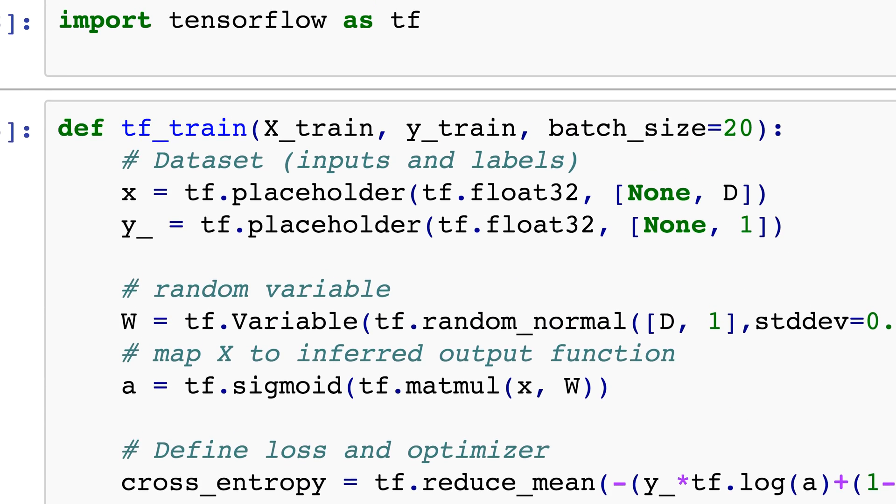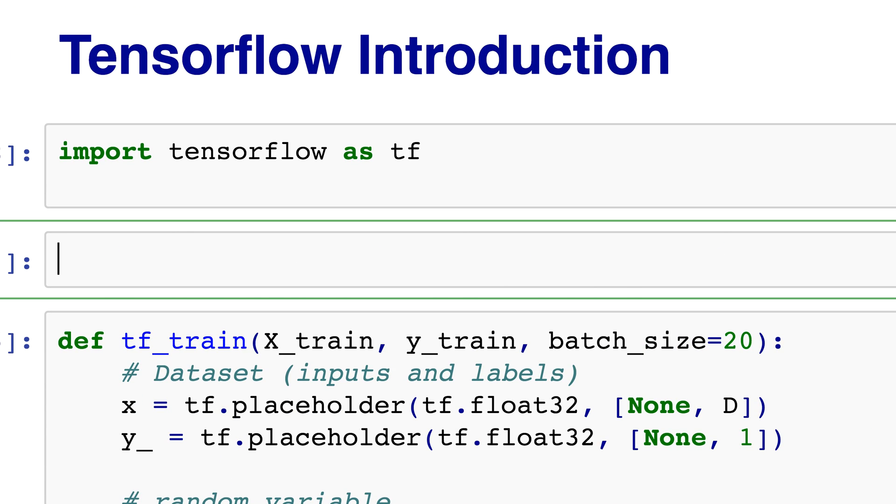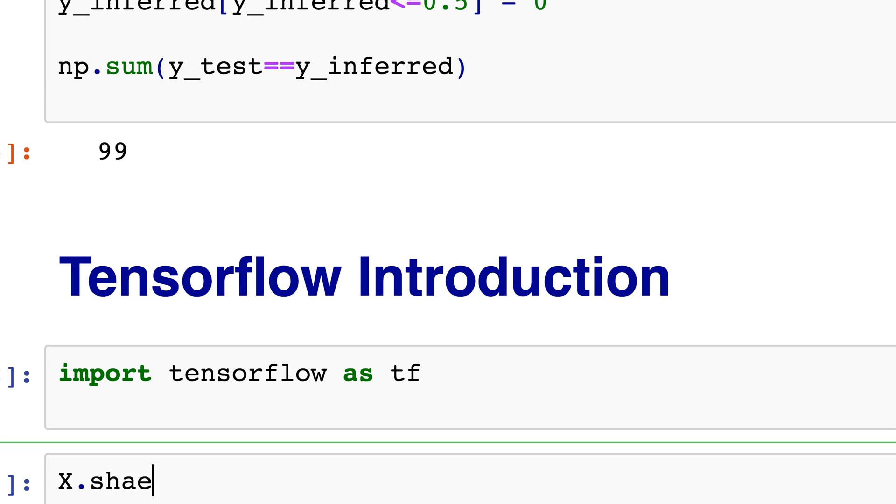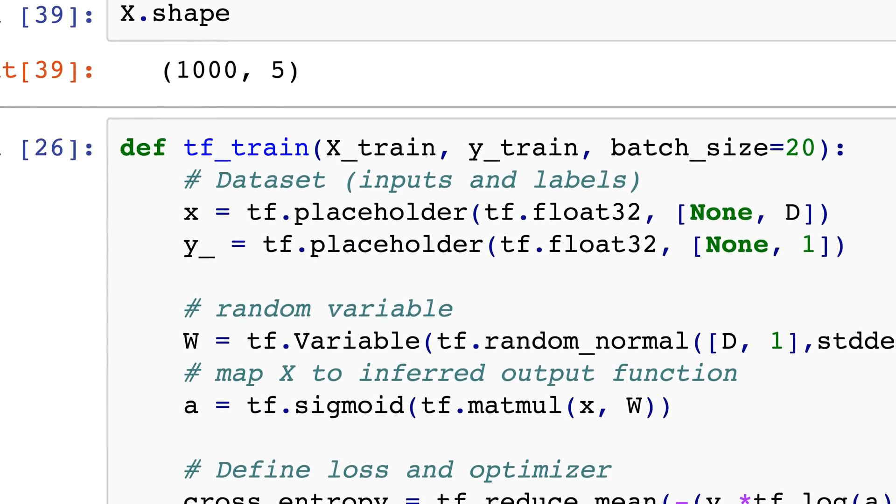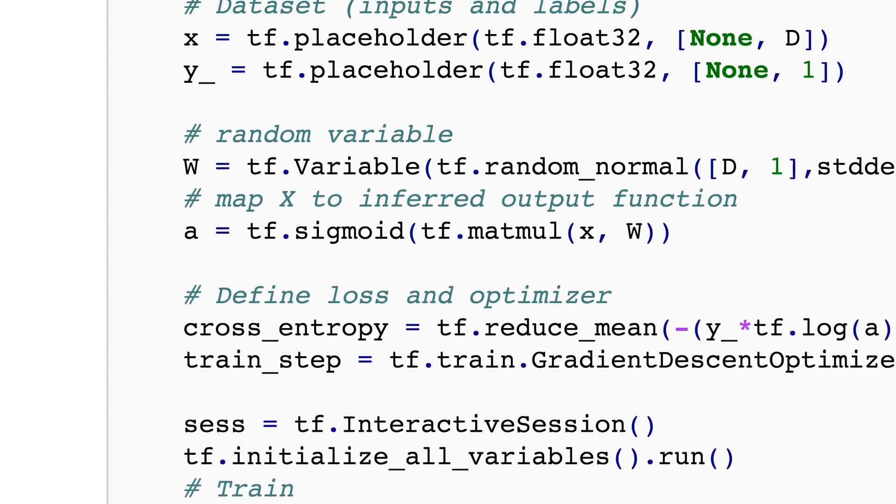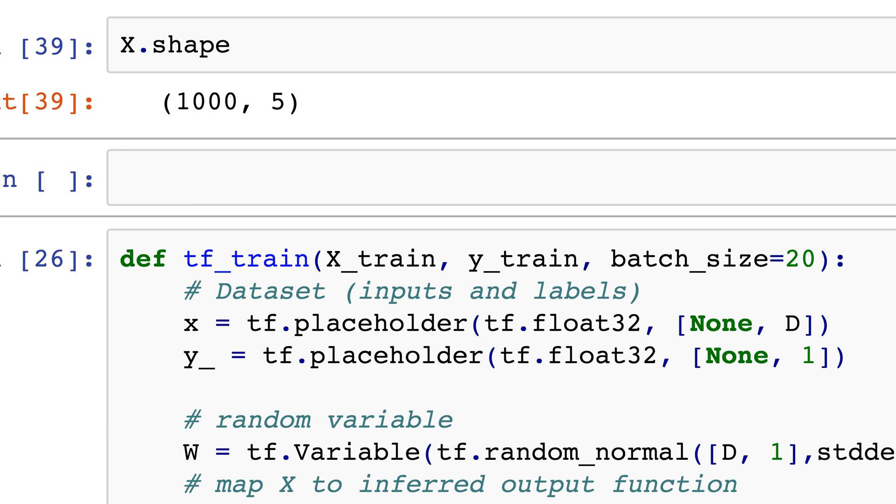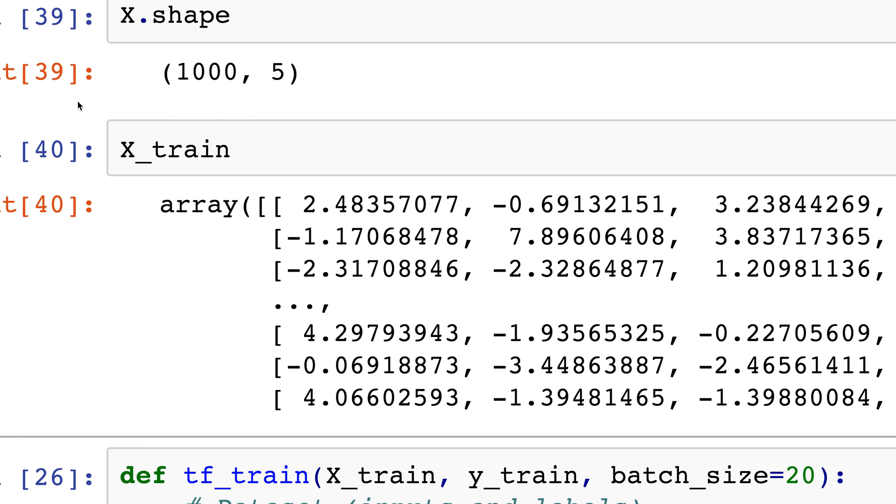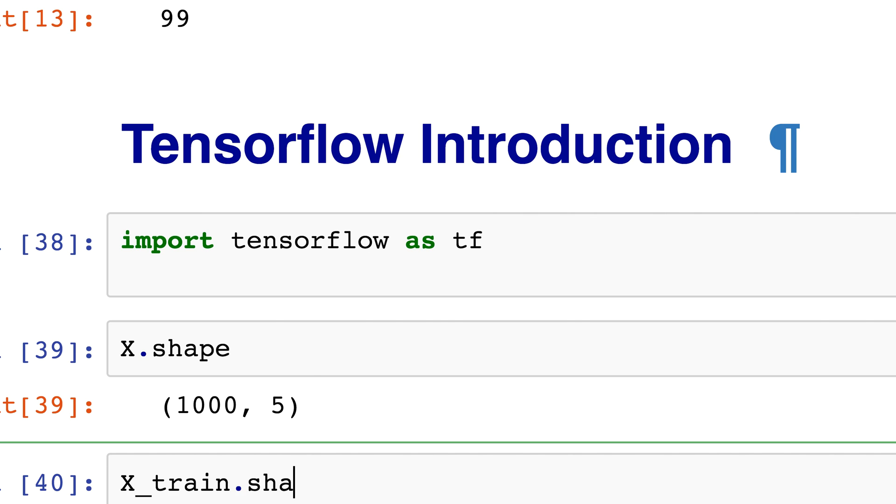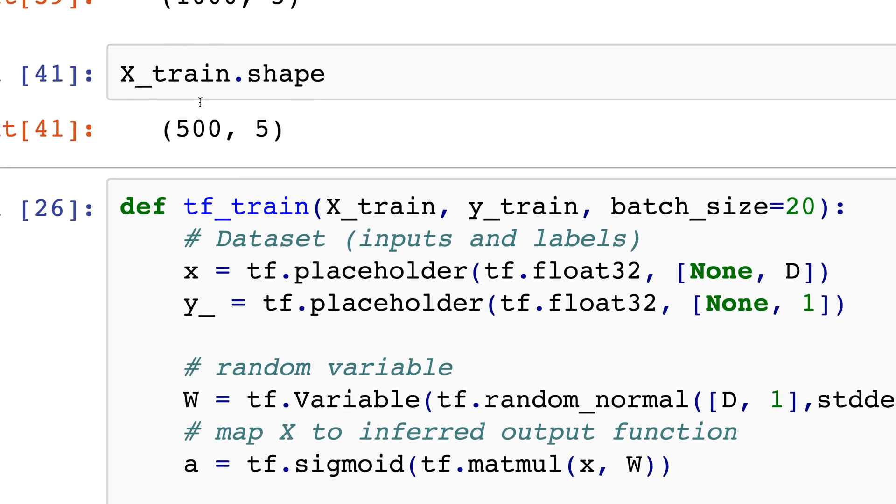So x dot shape, it's a thousand by five. In fact x underscore train is 500, so I've just taken half of that. It's 500 instances.